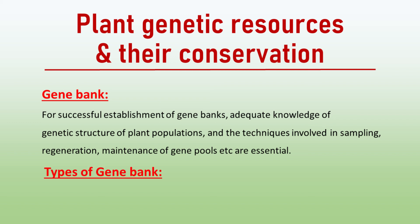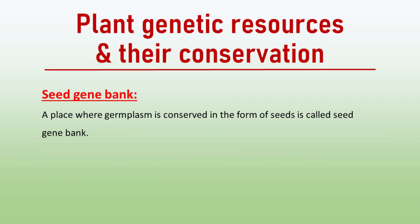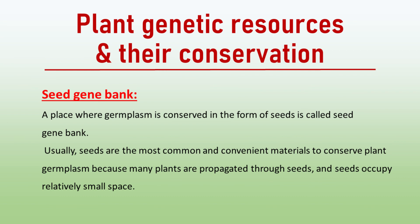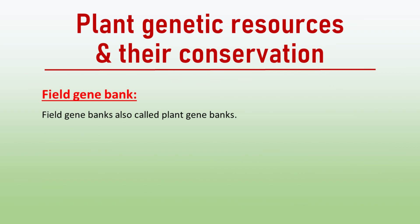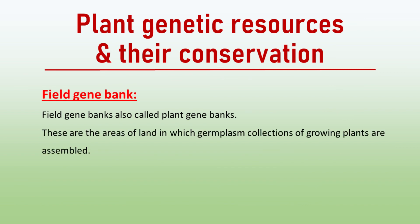Different types of gene bank include seed gene banks and field gene banks. A seed gene bank is a place where germplasm is conserved in the form of seeds. Seeds are the most common and convenient materials to conserve plant germplasm because many plants are propagated through seeds, and seeds occupy relatively small space. Further, seeds can be easily transported to various places. Field gene banks, also called plant gene banks, are areas of land in which germplasm collections of growing plants are assembled.